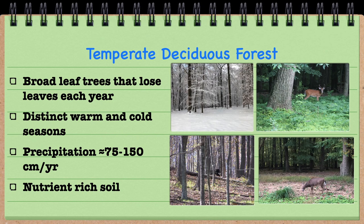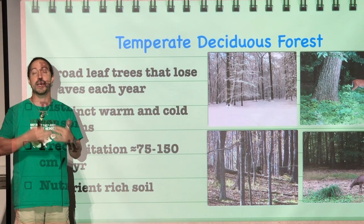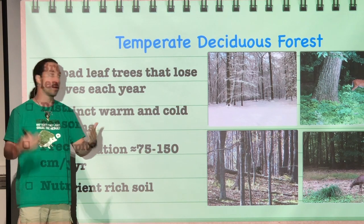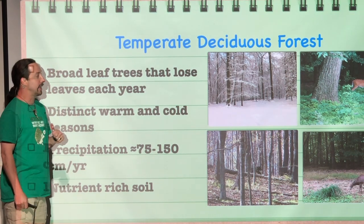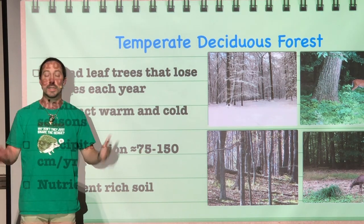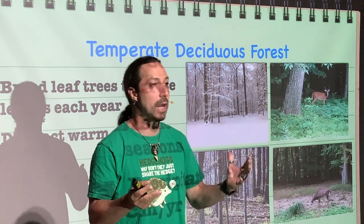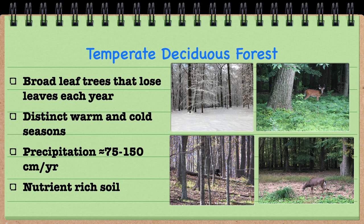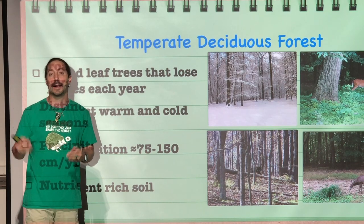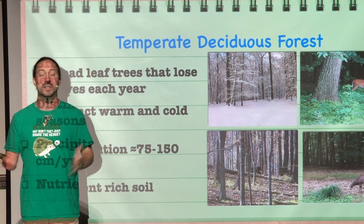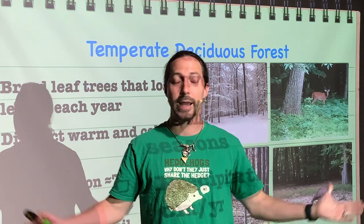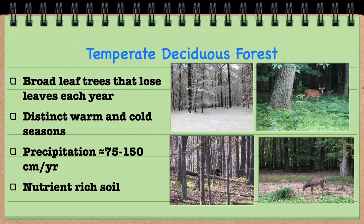Next, we move to the temperate deciduous forest. This is where you're going to find broadleaf trees that lose their leaves in the winter months — deciduous trees — which are the dominant plant species here. These forests have both warm and cold seasons: both a winter and a summer. The precipitation is approximately 75 to 150 centimeters a year, much more than the taiga, tundra, or polar regions. The soil is generally nutrient-rich, and that, combined with plenty of water, allows these deciduous trees to grow.